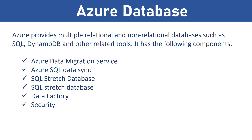Database components include: Azure Data Migration Service — used to migrate data from an existing SQL server and database in the on-premises data center into Azure. Azure SQL Data Sync — used to replicate data from an on-premises database into Azure. SQL Stretch Database — a hybrid database that divides data into hot and cold types; hot data stays in the on-premises data center, cold data goes to Azure. Azure Data Factory — used for ETL (extraction, transformation, loading).